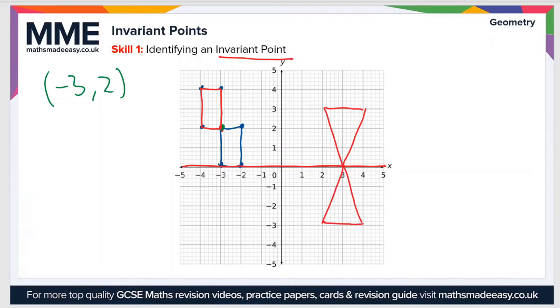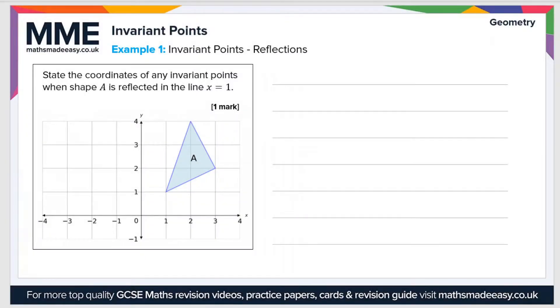And once again, you can see that there's an invariant point. And this time it's the point 3, 0. So let's take a look at an example now. State the coordinates of any invariant points when shape A is reflected in the line x equals 1.